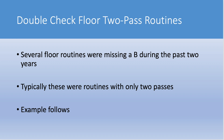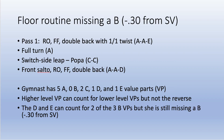Typically these were routines with only two passes. For example: the first pass was a round-off flick-flack double back with a full twist, a full turn, a switch side leap to popa, and then a front salto round-off flick-flack double back. It's a very nice routine, however it is missing a B. The gymnast has five A value parts, no B's, two C's, one D, and one E. The D and E can count for two of the three B's needed, but she's still missing a B value part, resulting in a 9.7. Coaches should double-check floor routines, particularly those with two passes, to ensure at least eight value parts including a minimum of five that count for the B and C requirements.